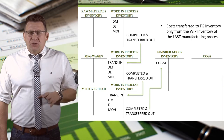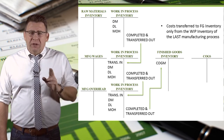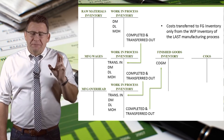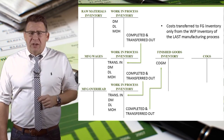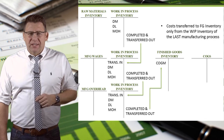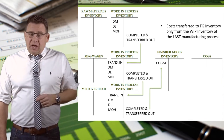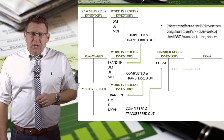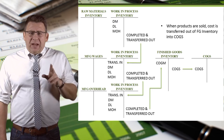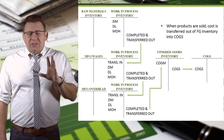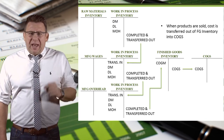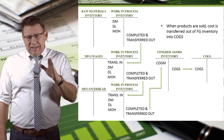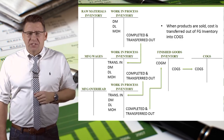Costs are transferred to finished goods inventory only from the WIP inventory of the final manufacturing process. This cost is known as the cost of goods manufactured. Finally, when products are sold, costs are transferred out of finished goods inventory and into costs of goods sold.